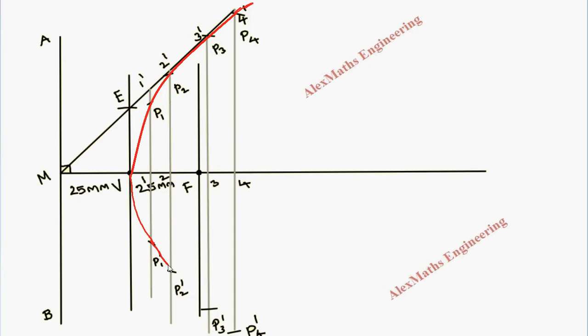Similarly, on the bottom side, we draw a smooth curve passing through P1', then P2', then P3', then P4', extending it outward. If there is any sharp bend, make it smoother. This completes the required parabola construction.